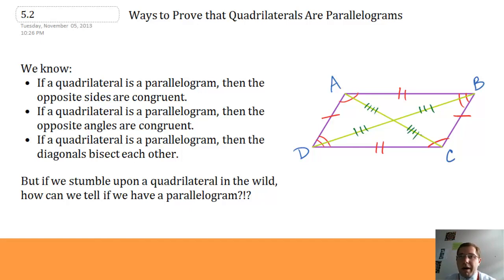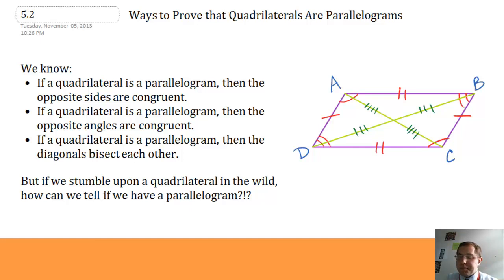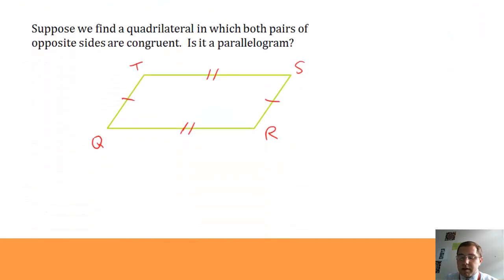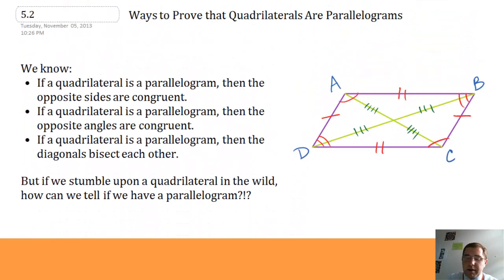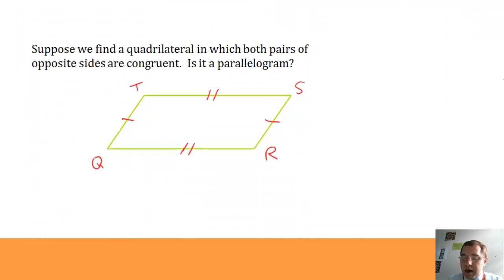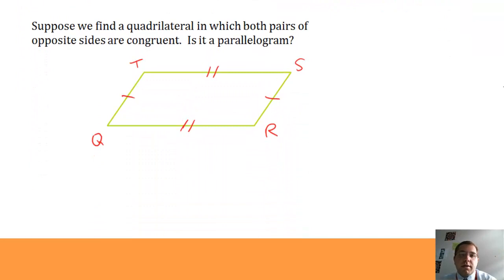So those are things that I know are true about parallelograms. But what if I stumble upon a random quadrilateral in the wild, in the jungle of life, and I want to know if that quadrilateral is a parallelogram? How can I tell if my wild quadrilateral is a parallelogram? Suppose we find a quadrilateral and we don't know if it's a parallelogram, but it has four sides and both pairs of opposite sides are congruent. Does that make it a parallelogram?